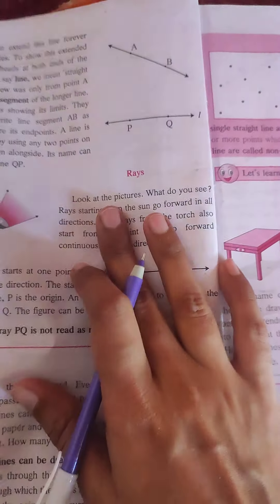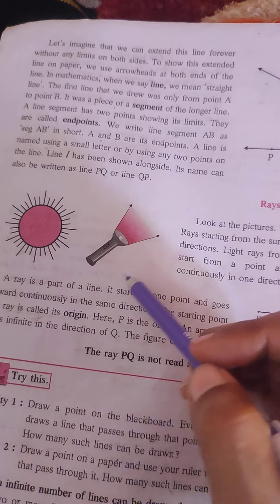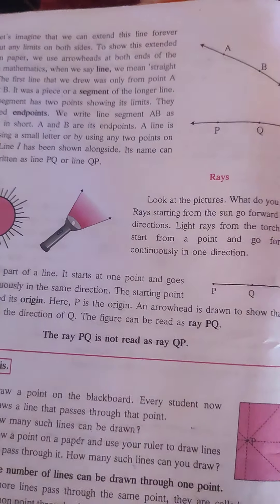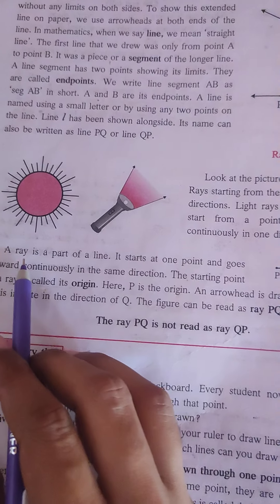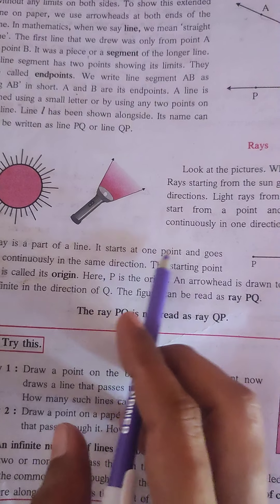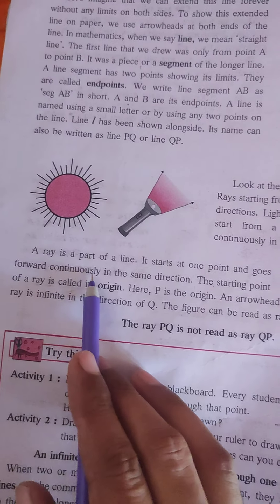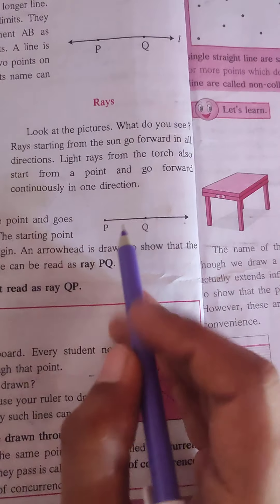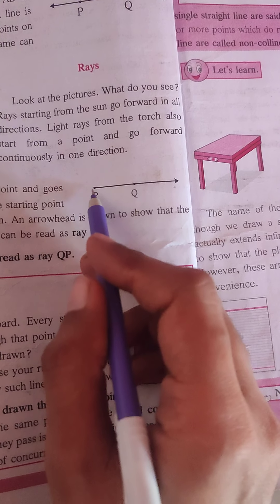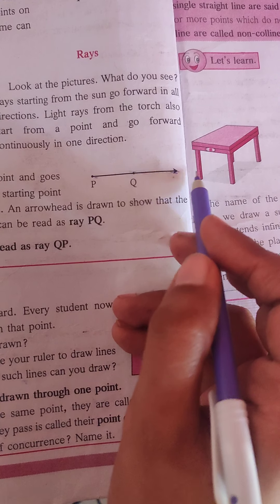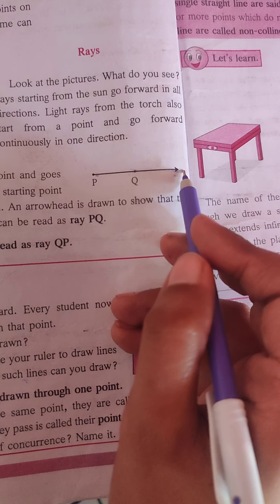As you can see this torch, ray means only extended one side. Here is the definition: A ray is a part of a line. It starts at one point and goes forward continuously directly in the same direction. See here, PQ, it is only goes in one direction. It extends only one direction. It's called a ray.